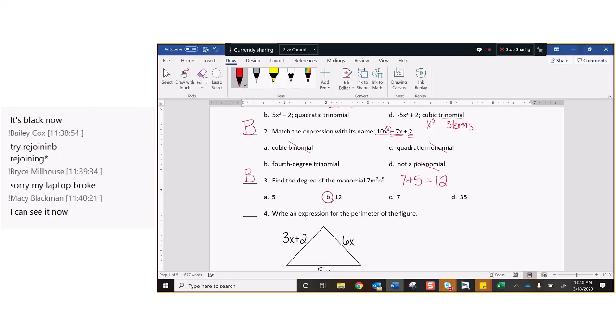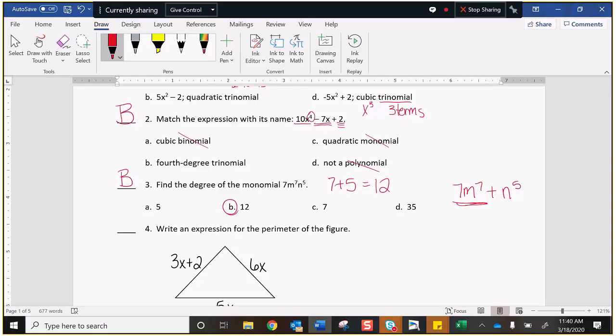So what you need to do here is add all the exponents. So 7 plus 5 is 12, so the degree here is 12, and it comes from the 7 plus 5. Now that's different than if you were to have something like 7m to the 7th plus n to the 5th, the degree of that binomial would just be 7, because you look at the highest degree term. Here, this is all one term. There's no addition or subtraction. It's one piece. You add them together.